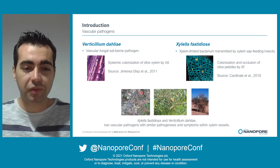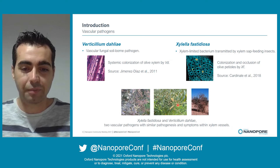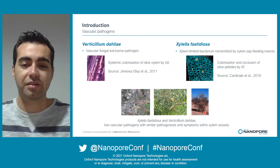In both cases, the symptoms start with chlorosis and necrosis of the leaf, followed by the death of the branches, and finally the death of the whole tree, because of the obstruction of xylem vessels where the xylem sap flows.